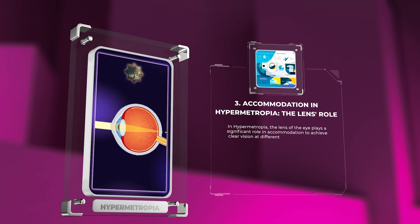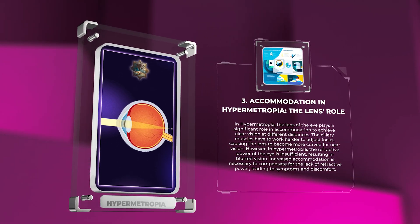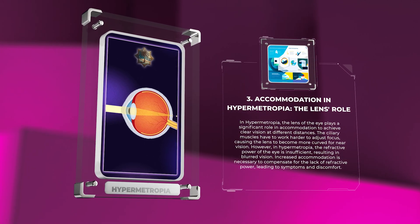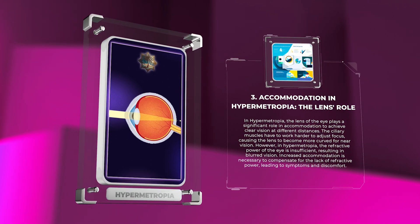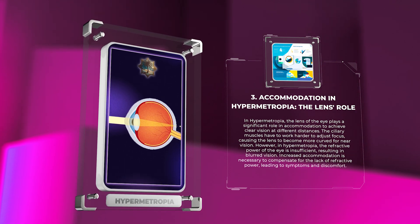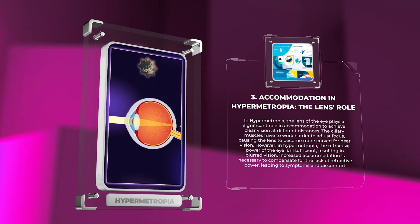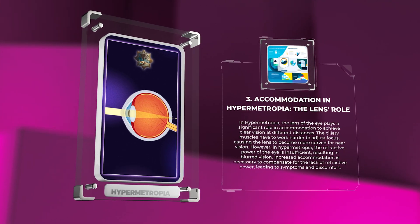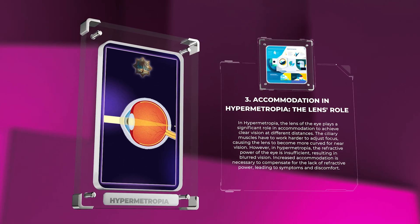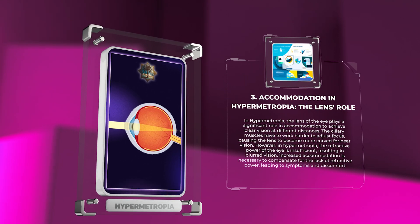In hypermetropia, the lens of the eye plays a significant role in accommodation to achieve clear vision at different distances. The ciliary muscles have to work harder to adjust focus, causing the lens to become more curved for near vision. However, in hypermetropia, the refractive power of the eye is insufficient, resulting in blurred vision. Increased accommodation is necessary to compensate, leading to symptoms and discomfort.